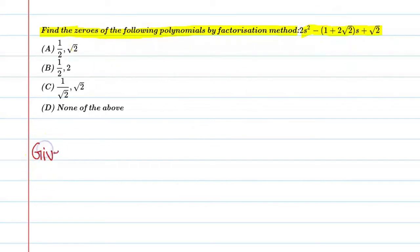First of all, we will write the given polynomial. The polynomial is in variable s, so we can say p(s) = 2s² - (1 + 2√2)s + √2.